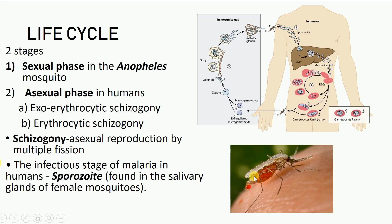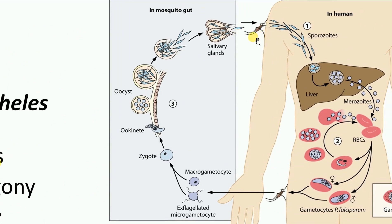The female Anopheles mosquito not only serves as a host for the Plasmodium but also serves as a vector for the transmission of disease from an infected individual to a healthy human being. The female Anopheles mosquito carries the infectious stage of the parasite called sporozoites inside its salivary glands. When it bites a healthy human being, it injects these sporozoites into him, as shown in the picture, while sucking the blood of the human being.